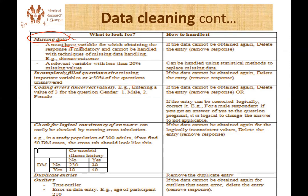If we miss that kind of data, then what we are supposed to do is: if there is another primary source for the data, we have to go and confirm and make sure we get the data. But if we can't obtain the data, we have to delete the entire entry of that patient, because we can't analyze data which doesn't have the critical variables like the outcome of the study.